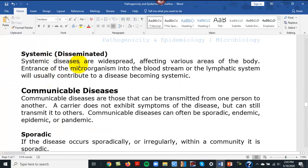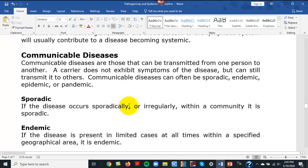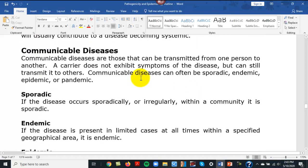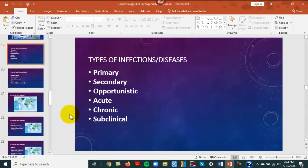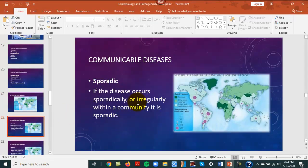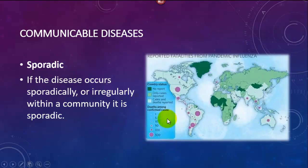Local means one area of the body is affected. Systemic means the entire body is involved. Communicable diseases are spread by direct contact — those that can be transmitted from person to person. A carrier does not exhibit symptoms of a disease but can still transmit it to others. Sporadic is a disease that shows up irregularly — Ebola, for example, will show up, cause an outbreak, and then go away.